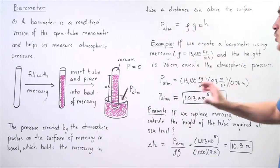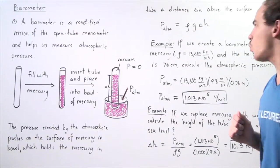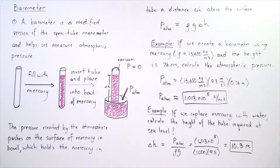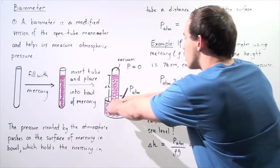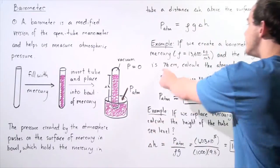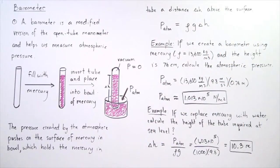Let's look at the following two examples. Example number one, if we create a barometer using mercury, which has a density of 13,600 kilograms per meter cubed and the height of our mercury along the test tube is 76 centimeters, calculate the atmospheric pressure.